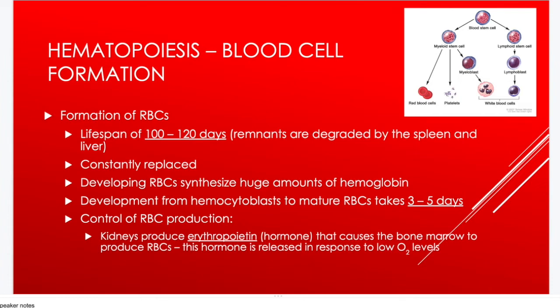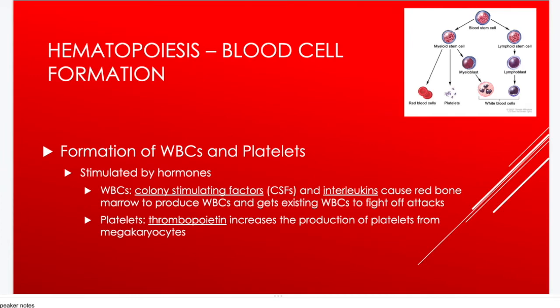Erythropoietin is released by the kidneys in response to low oxygen levels — either from breathing difficulties or because red blood cells are wearing out and need replacement. White blood cells are stimulated by colony-stimulating factors and interleukins. Platelets are stimulated by a hormone called thrombopoietin, which signals megakaryocytes to produce platelets.